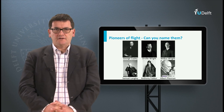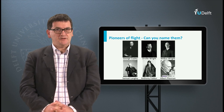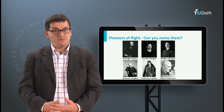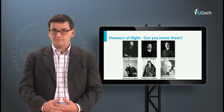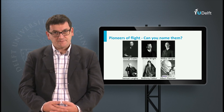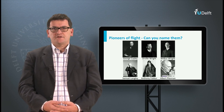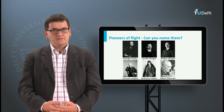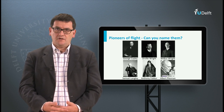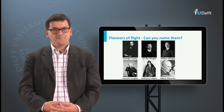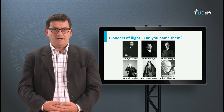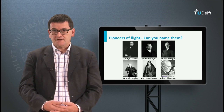Mr. Langley was a competitor of the Wright brothers. He tried his aircraft a few weeks before the first successful flight of the Wright brothers, but he failed. The last two, Anthony Fokker and Albert Plessman, are famous Dutch aviation pioneers. Fokker built many aircraft and even today there is still a company bearing his name. Mr. Plessman was the first administrator of the KLM, one of the oldest airlines in the world.